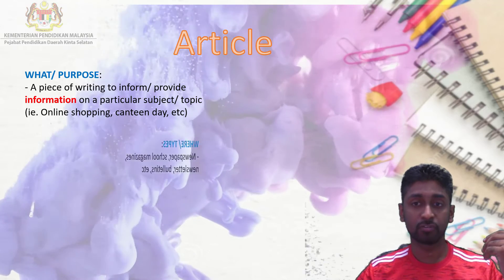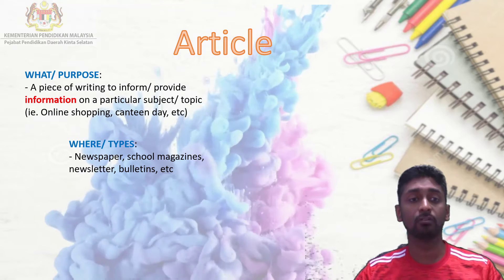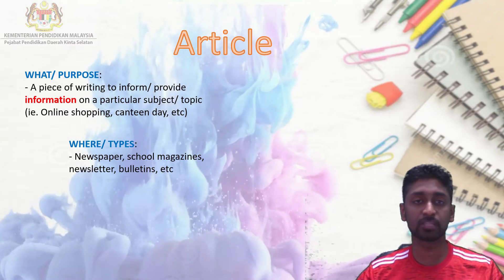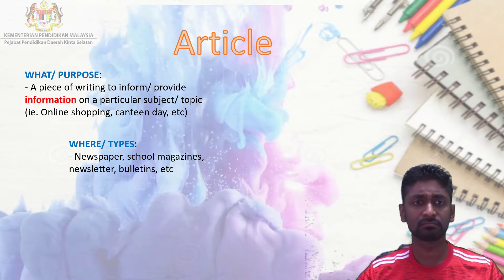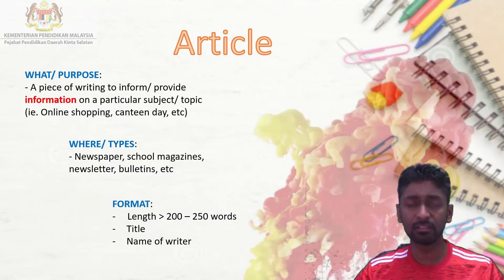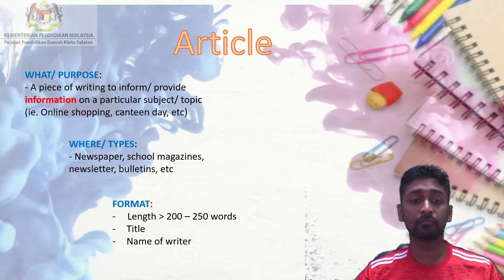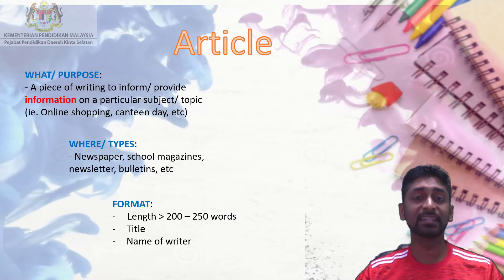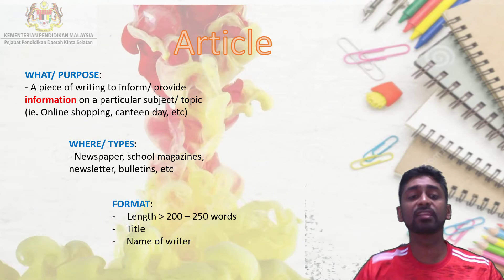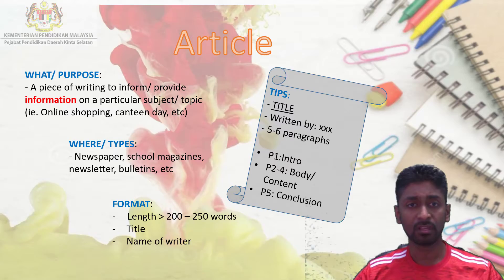Where do you see, read, or write articles? You can always find them in newspapers, school magazines, newsletters, bulletins, or anywhere else. The basic format for an article in Paper One is between 200 and 250 words. The extra special thing for articles is that you need to have the title underlined at the top and include the name of the writer.